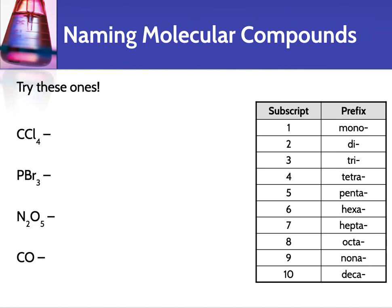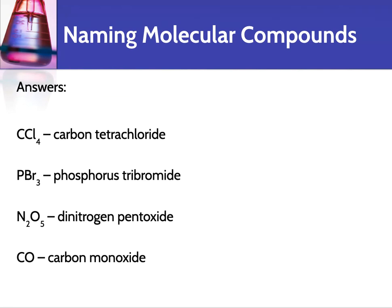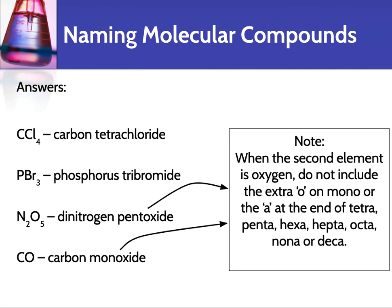Here are some for you to practice, and here are the answers. One thing to point out: when the second element is oxygen, you don't include the extra vowel on the prefix before 'oxide.' So you drop the 'o' on 'mono' or the 'a' at the end of tetra, penta, hexa, hepta, octa, nona, or deca. It's 'pentoxide,' not 'pentaoxide,' and 'monoxide,' not 'monooxide.'